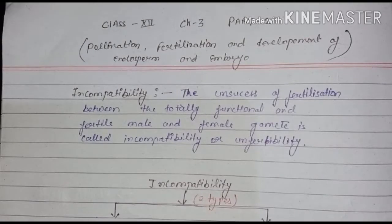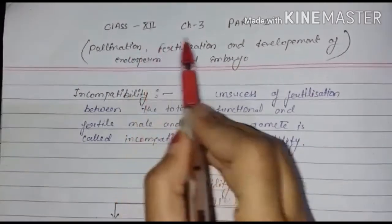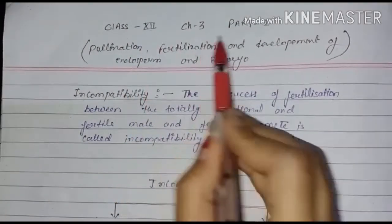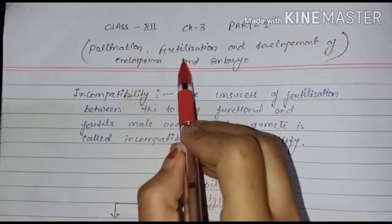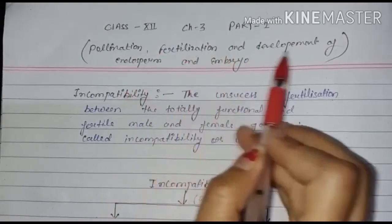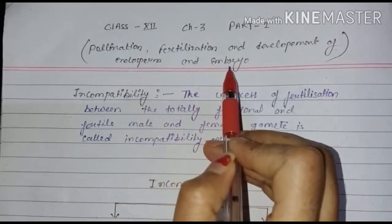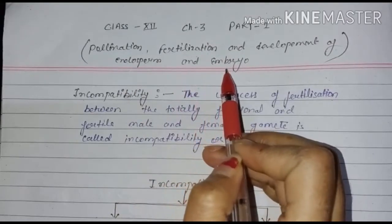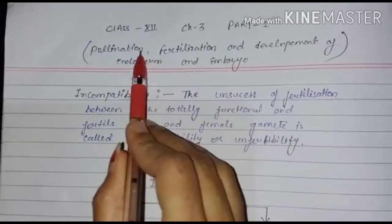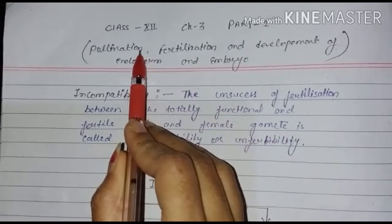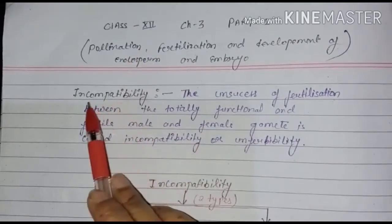Hello students, today I start Class 12 Chapter 3 Part 2. The chapter name is Pollination, Fertilization, and Development of Endosperm and Embryo. In the previous video we were discussing about pollination, their types, and their agents. In this video we will be discussing about incompatibility.